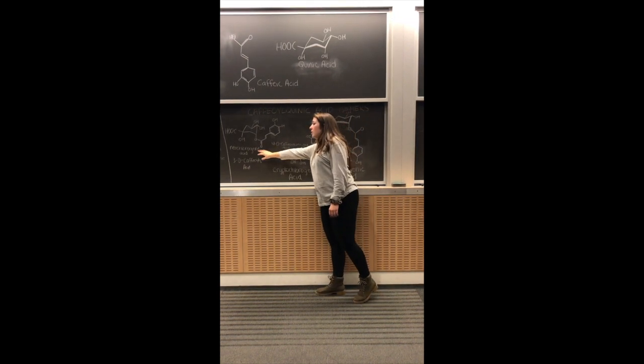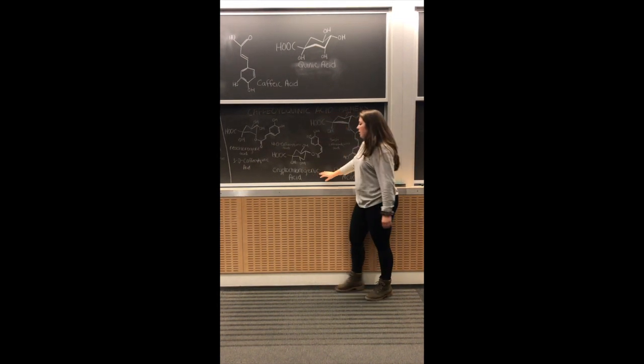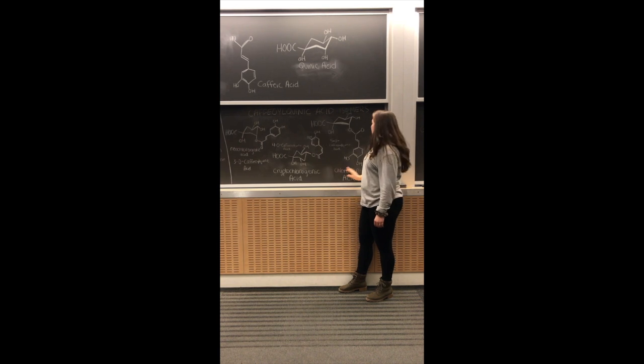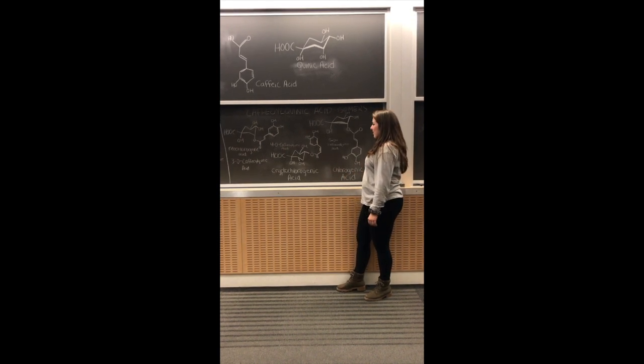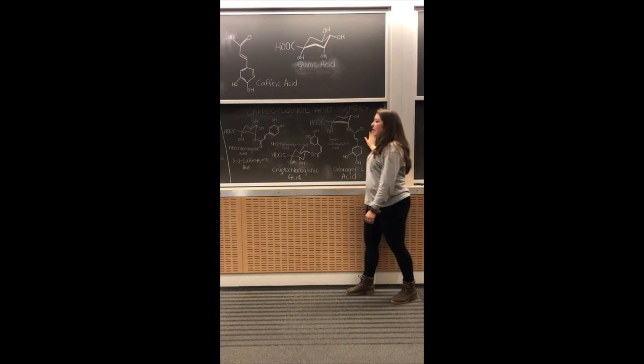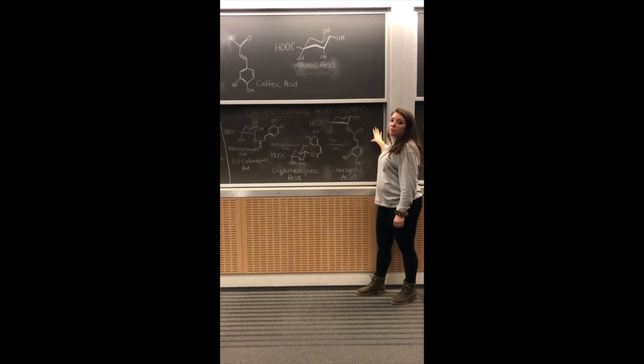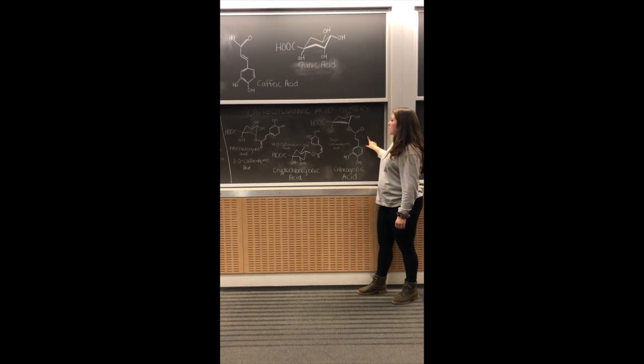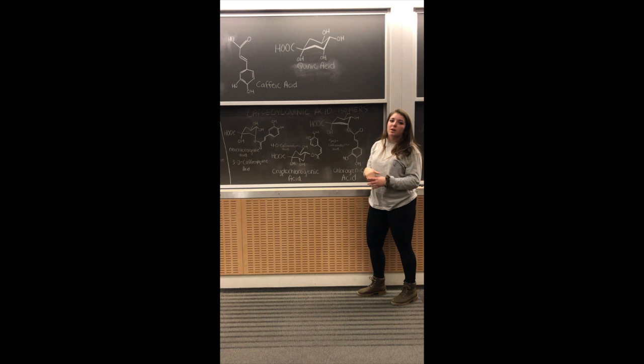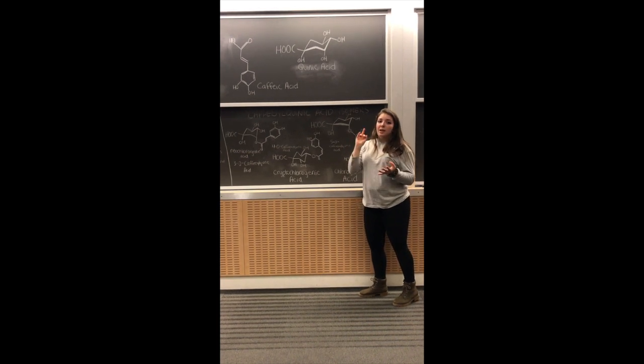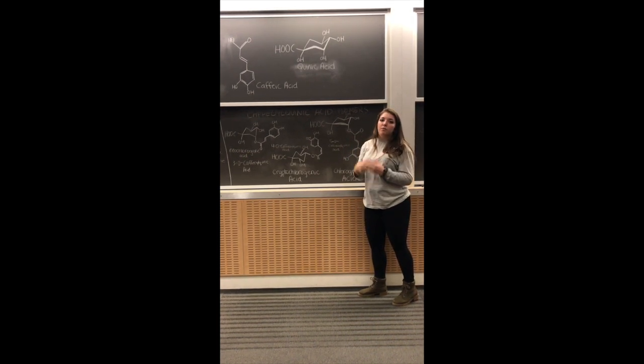These three isomers are neochlorogenic acid, cryptochlorogenic acid, and chlorogenic acid. Now, chlorogenic acid is the most abundant of the three, which is why we'll be discussing this one, because it has the most effect on the taste and the aroma of coffee.